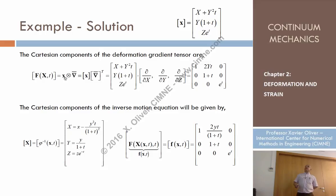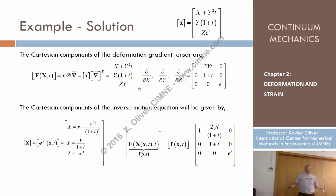We have to perform the operation: the spatial position vector times the material nabla operator. Since this is an open product or tensor product, we have matrix computation — we place the first vector and the transpose of the second, then multiply row by column as in usual matrix products. By doing that, we see these are the components of F, which depend on the material coordinates X, Y, Z — in this case only Y and T.